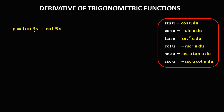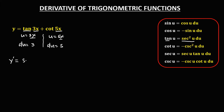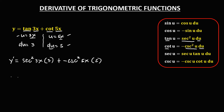Then for this given, for the first term, u is equal to 3x and the derivative of u is 3. For the second term, u is 5x and the derivative of u is 5. So to find now the derivative, for the first term, derivative of tangent is secant squared u, so secant squared 3x times the derivative of u, that's 3. Then plus for the second term, that's cotangent, whose derivative is negative cosecant squared u, so negative cosecant squared 5x times the derivative of u, that's 5.